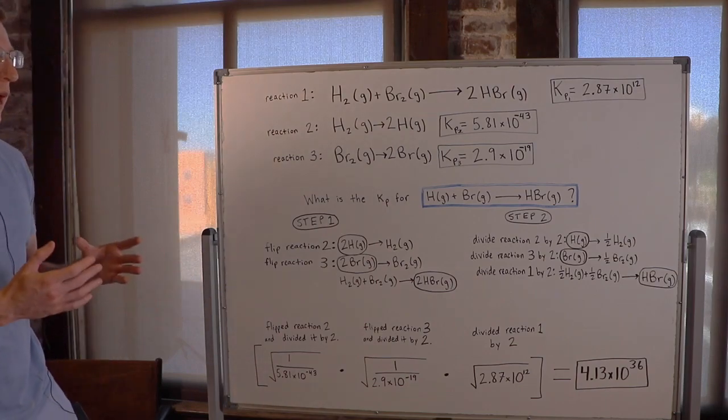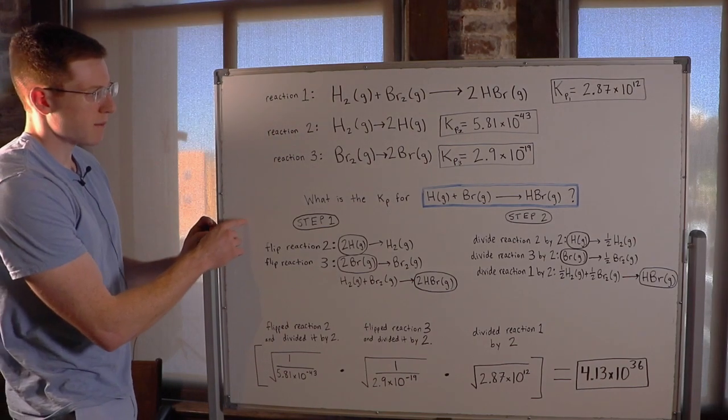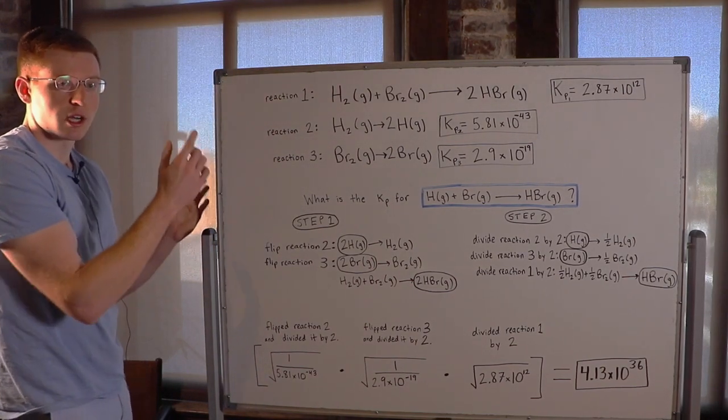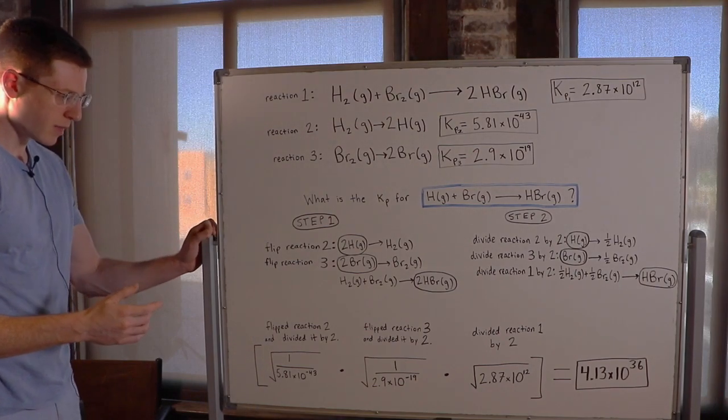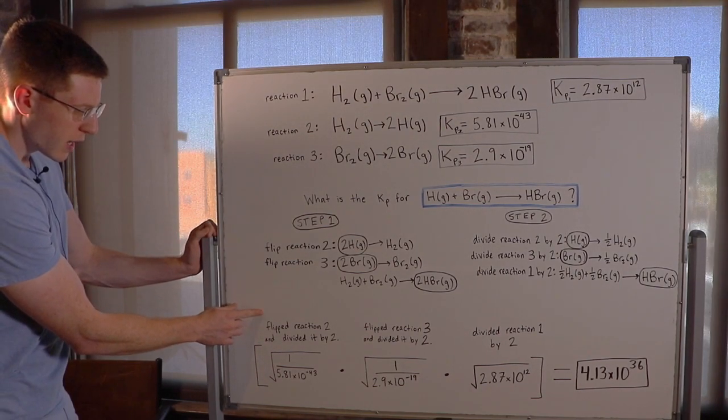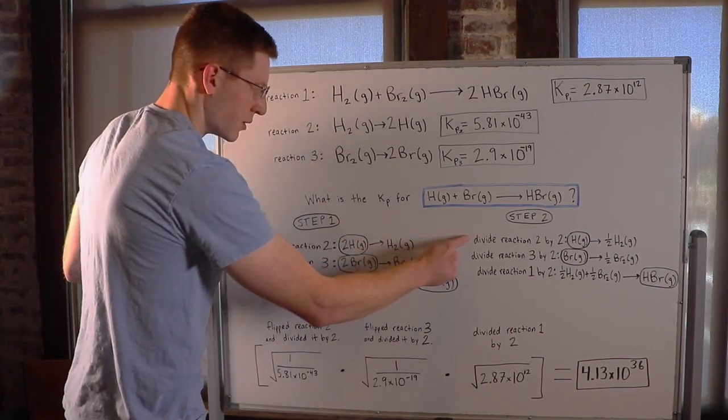So now I have to go back and remember what changes I made to each reaction so that I can adjust their Ks accordingly. So reaction 2, I first flipped it, and then I divided it by 2.